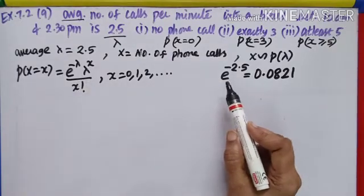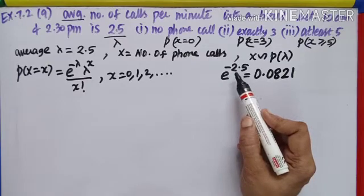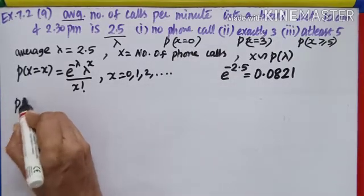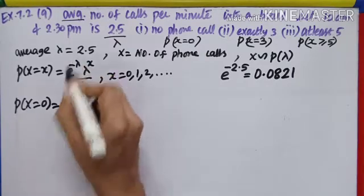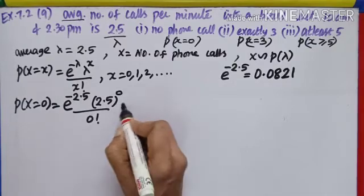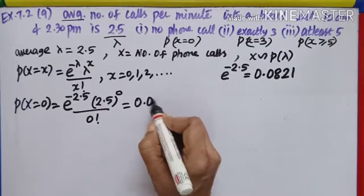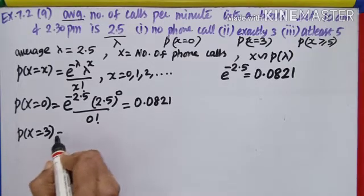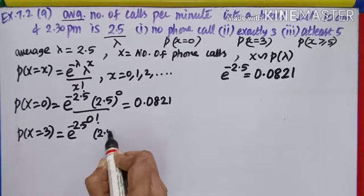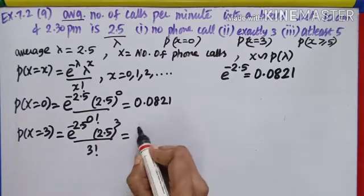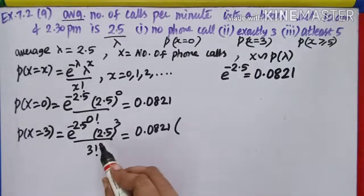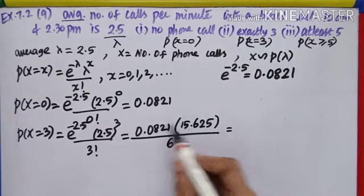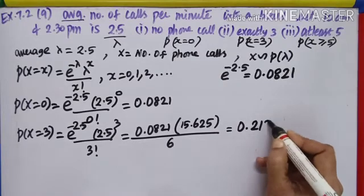Let us fill in the details. e^(−2.5): try it on your own by referring to the table in the book and check whether you get the same answer. First question, P(X = 0): e^(−2.5) · 2.5^0 / 0! = 0.0821 × 1 = 0.0821. Exactly 3, P(X = 3): e^(−2.5) · 2.5^3 / 3! = 0.0821 × 15.625 / 6 = 0.0821 × 2.604 = 0.2138.